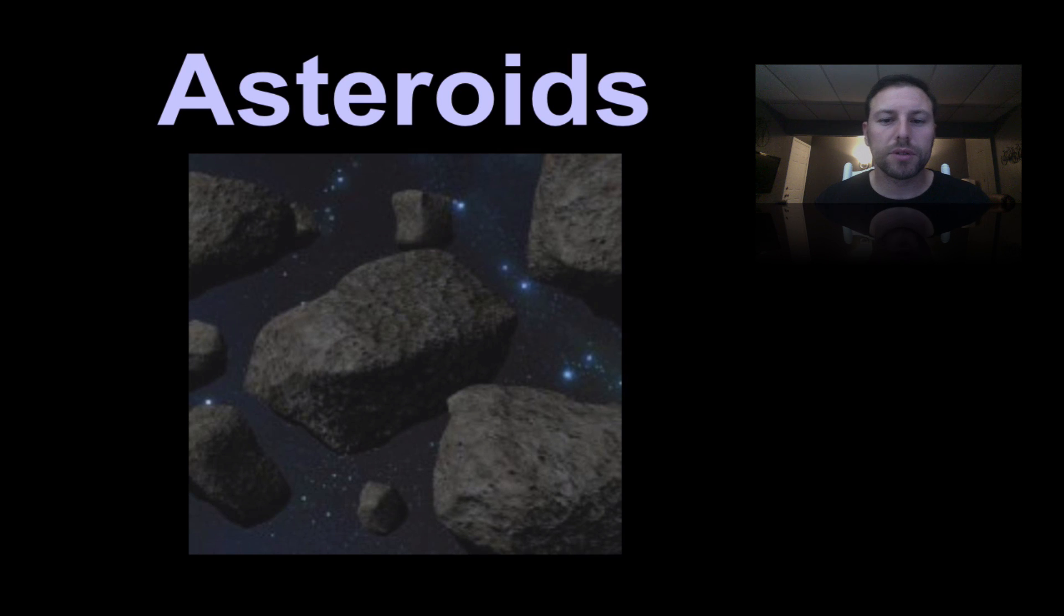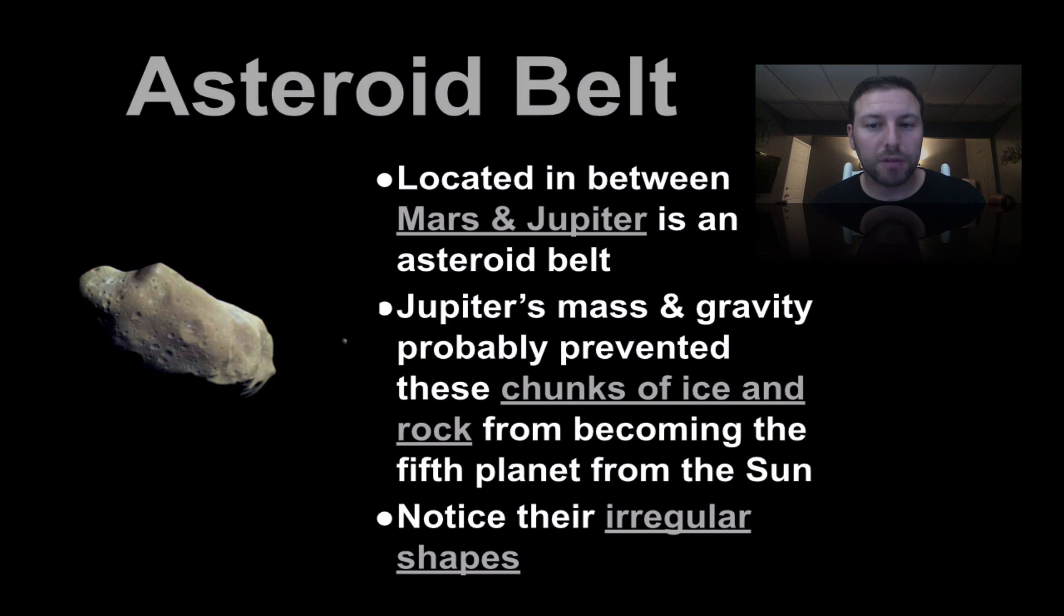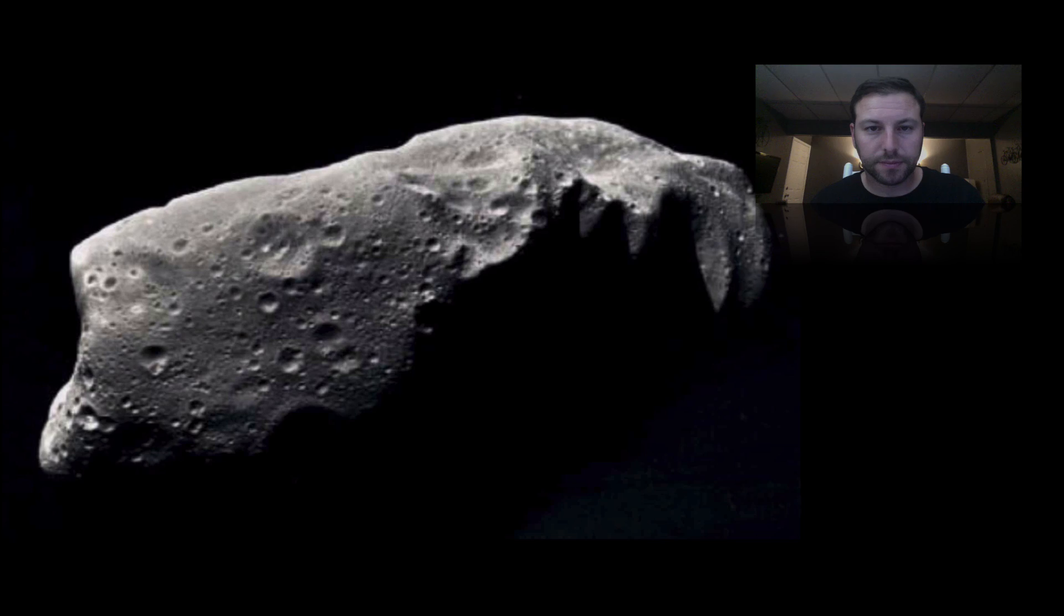So a little bit about asteroids. So we have our asteroid belt located between Mars and Jupiter, and Jupiter's mass and gravity probably prevented these from coming together to form a fifth planet. And they have irregular shapes, a lot of these asteroids. There's just another close-up image of one.